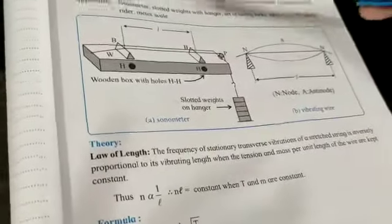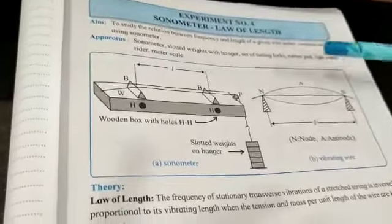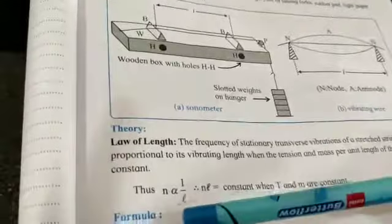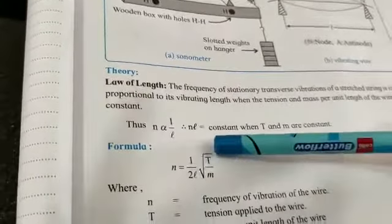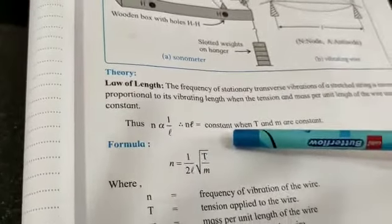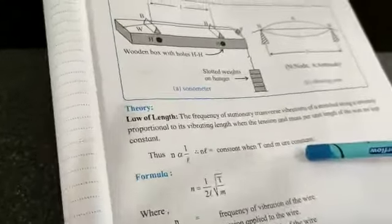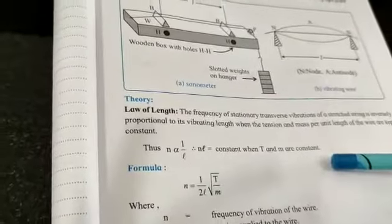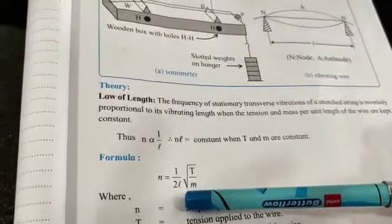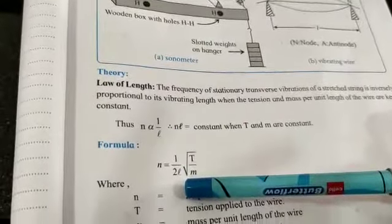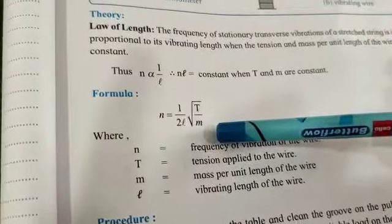In the sonometer, the first law is known as the law of length. The frequency is inversely proportional to the length, that is NL equals constant, when tension and mass per unit length are constant. The formula to find the frequency is: N equals 1 upon 2L multiplied by the square root of T by M.